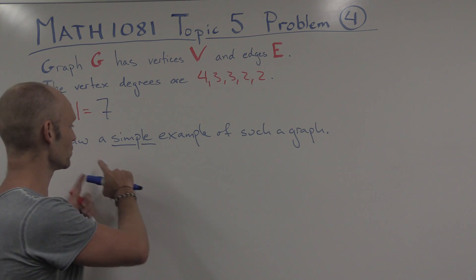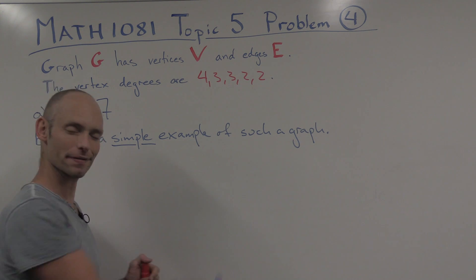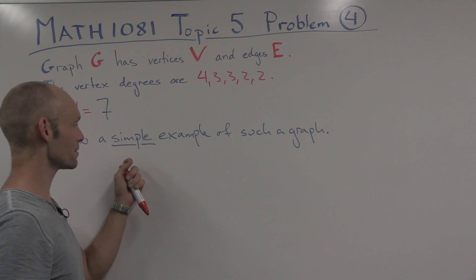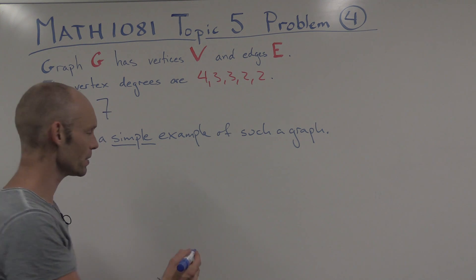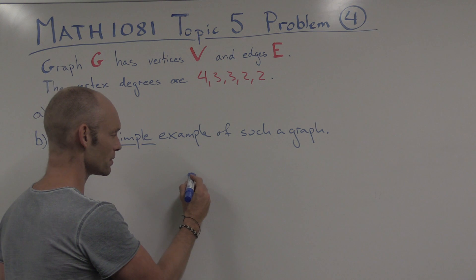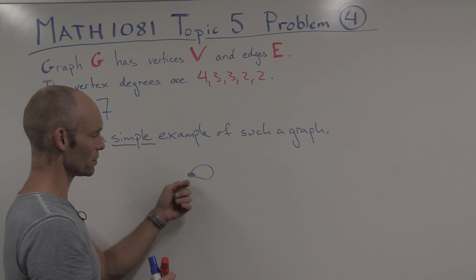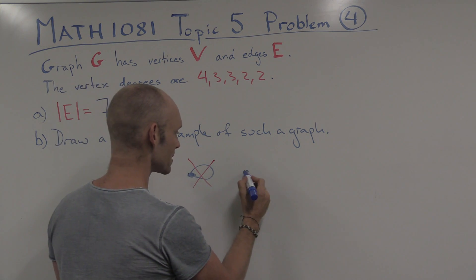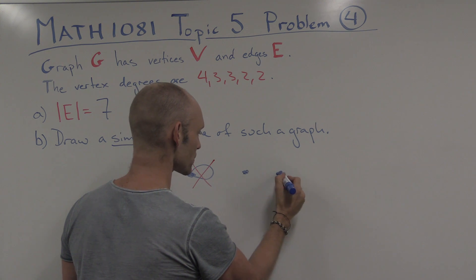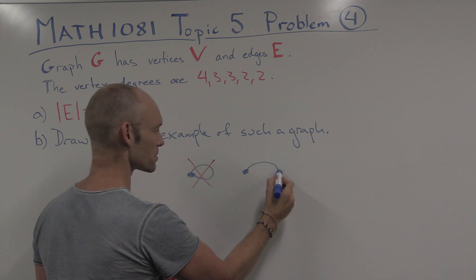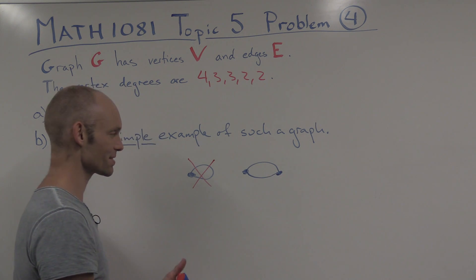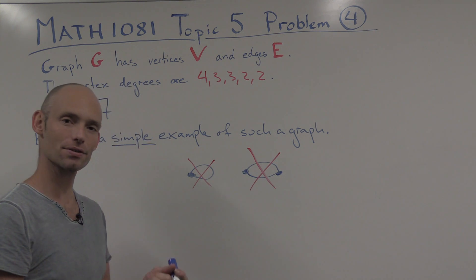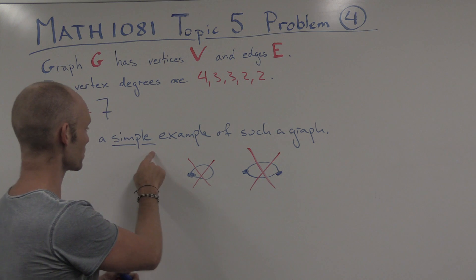Now the next thing that we have to do is to draw a simple example of such a graph. In other words, we're trying to find a graph that has these vertex degrees here and is simple. So first of all, what does simple mean? Well, it just means that we are not allowed to draw loops like this. So a vertex with an edge going to itself is forbidden. And we also forbid any sort of situation like this where we've got 2 vertices and at least 2 or more edges. So that's also forbidden. So in other words, there's at most 1 edge between every pair of vertices. So that's what simple means.